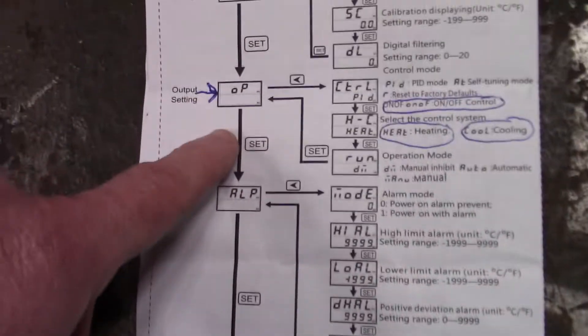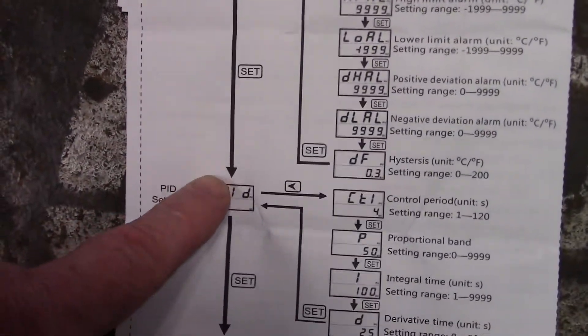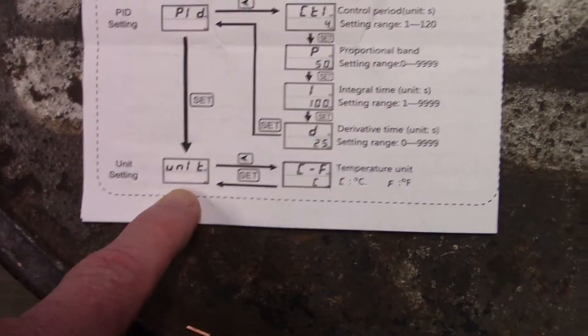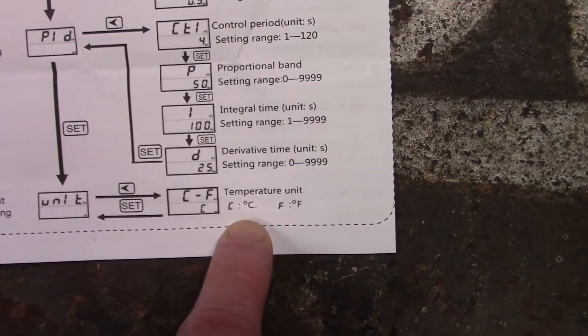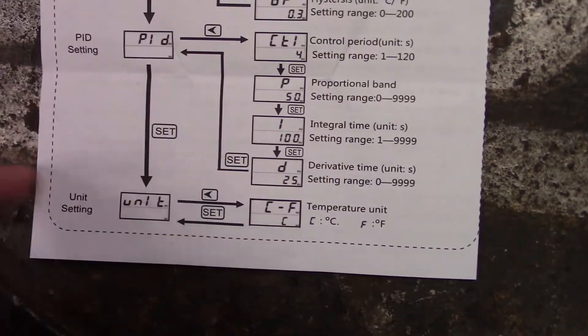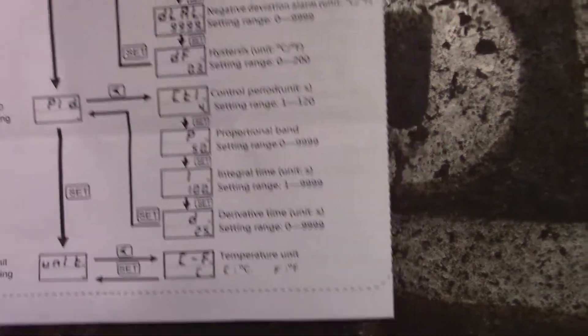Every time you press set you'll go down one of these main parts of the menu. In the unit menu you might want to go in, sometimes they're set for centigrade. If you want it in Fahrenheit you'll have to switch to Fahrenheit and hit set and then you're back out again.